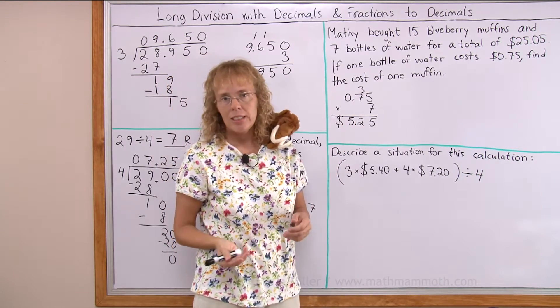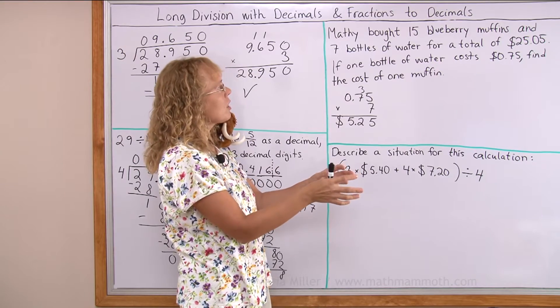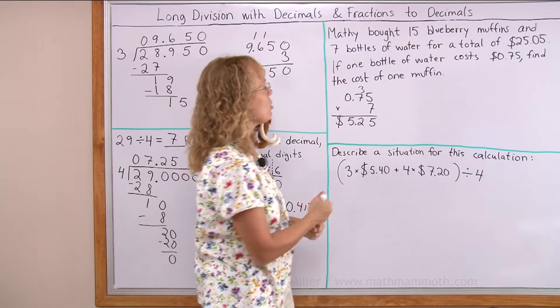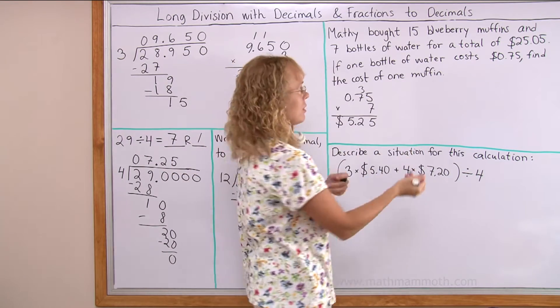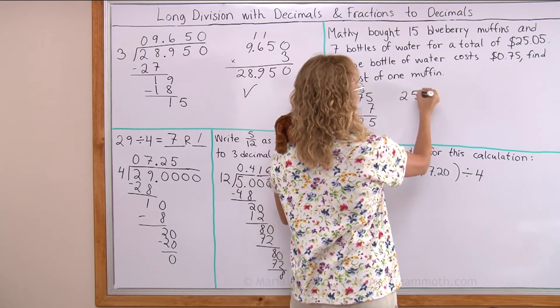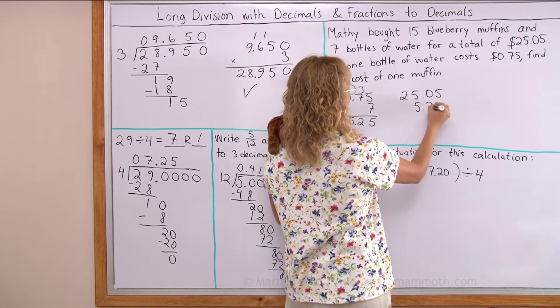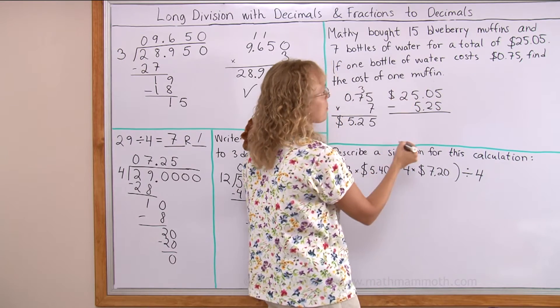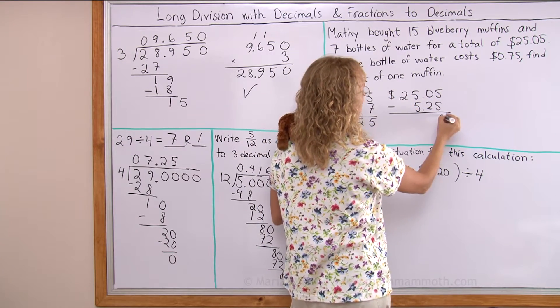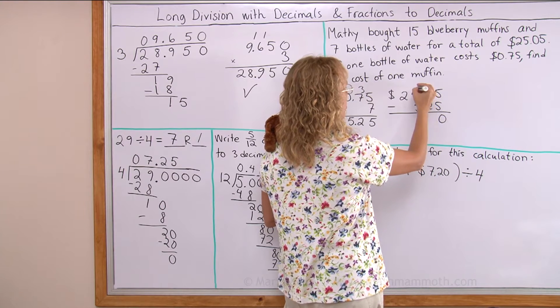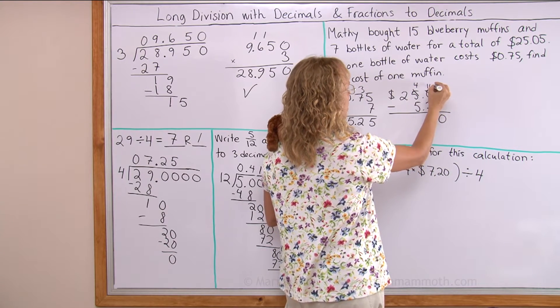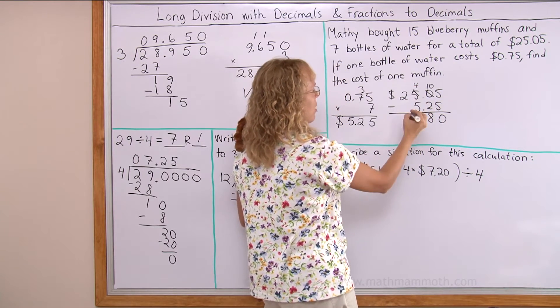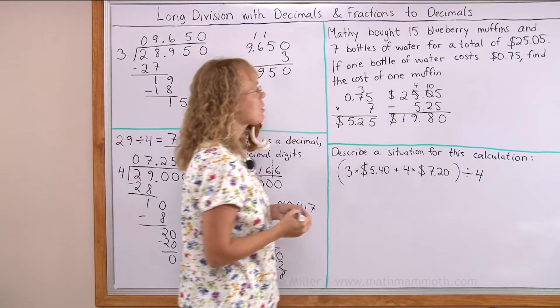Now we can solve something else, right? We know how much all the waters cost, we know the total of everything. So let's subtract those and then we will find the cost of all the muffins, right? 25.05, minus 5.25. This is a dollar amount. 5 minus 5. Over here, 0. Need to regroup. 10 minus 2. Over here I have basically 24 minus 5 which is 19.